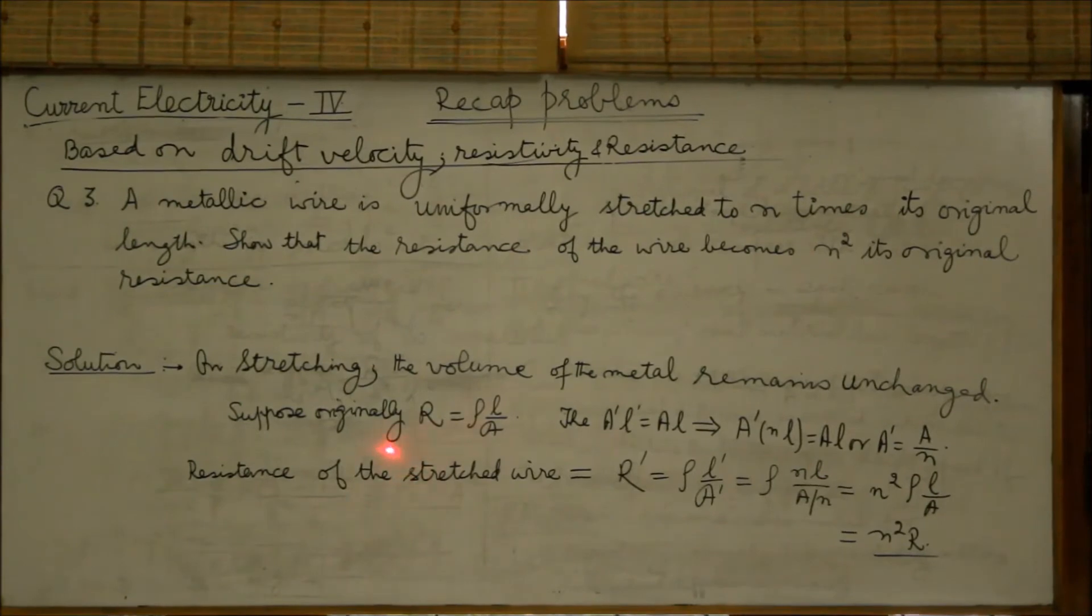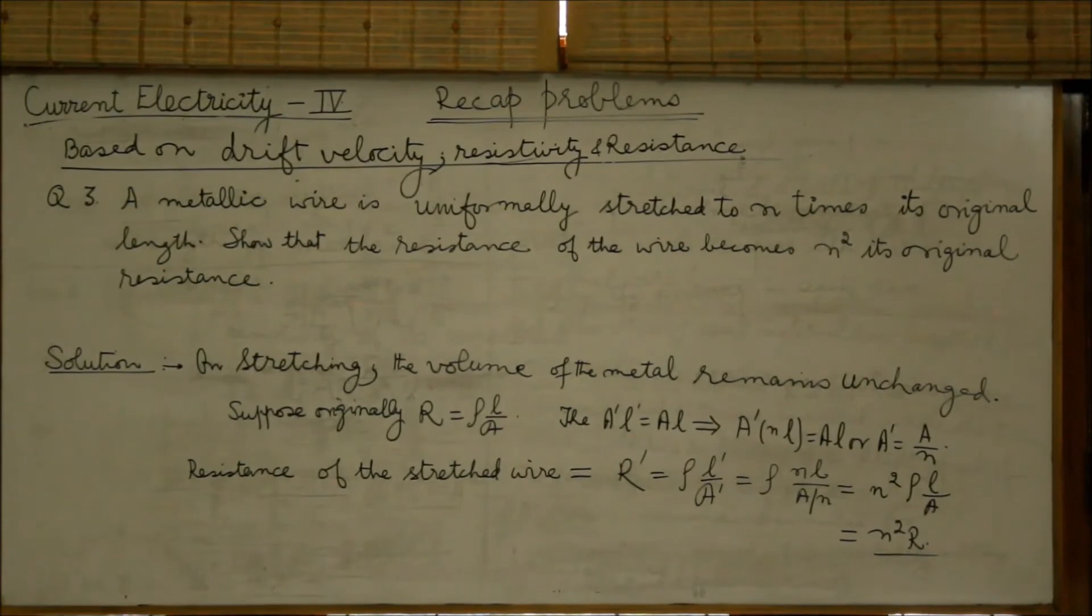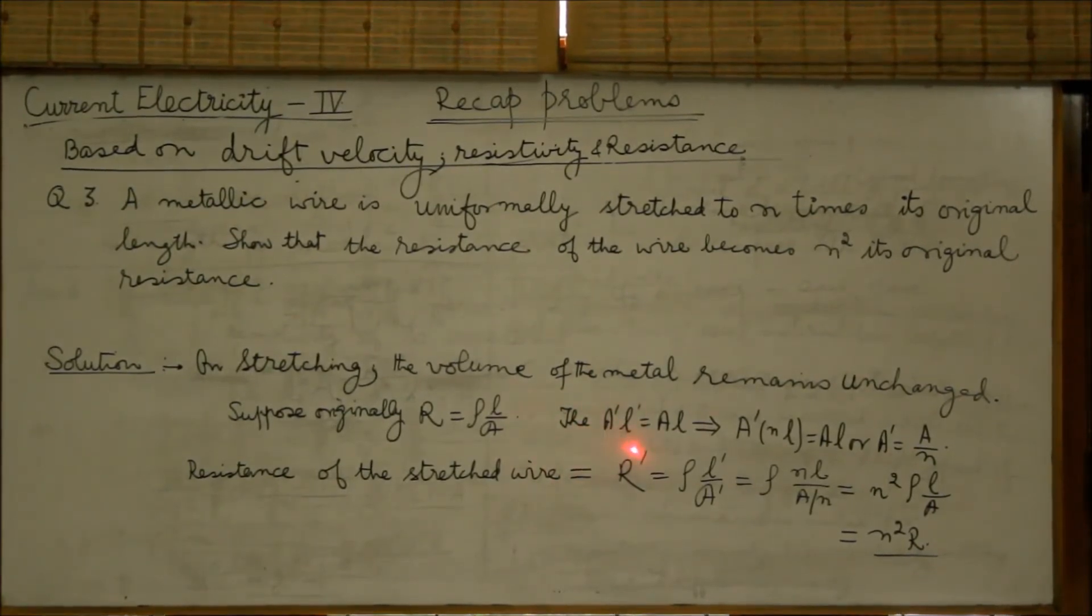So, if we assume that originally the wire had a length L and area A, we will get R equals rho L by A. Equating the volume of the stretched wire with that of the original wire, we get A dash into L dash equal to A into L. Where A dash is area of the stretched wire, L dash is length of the stretched wire.